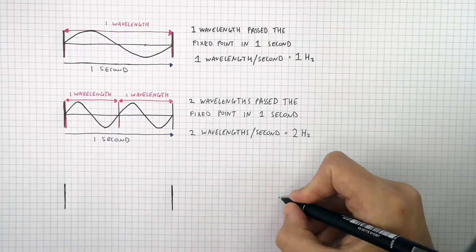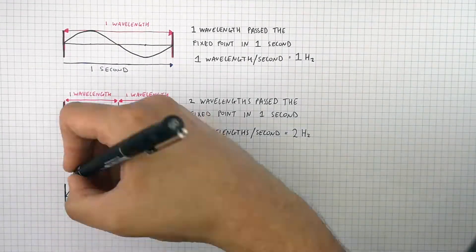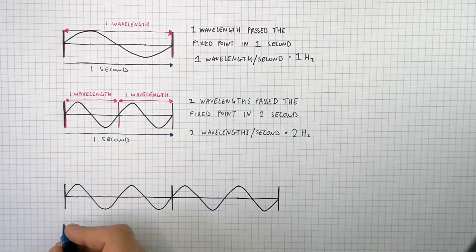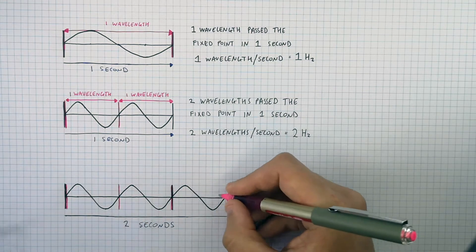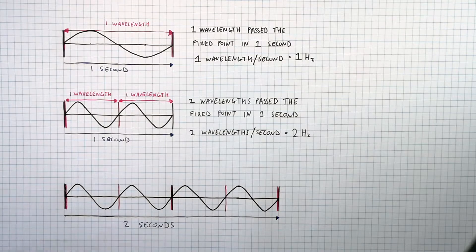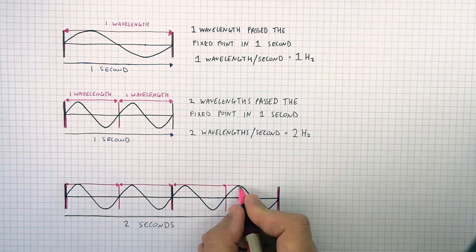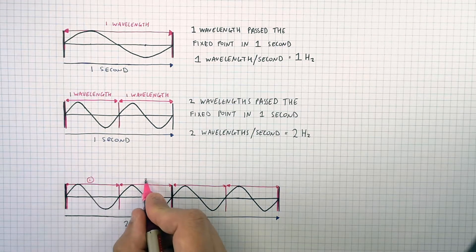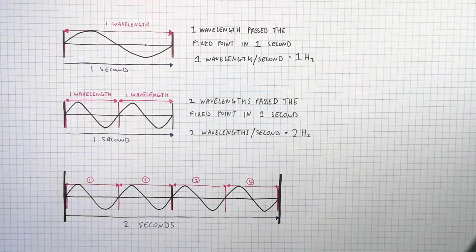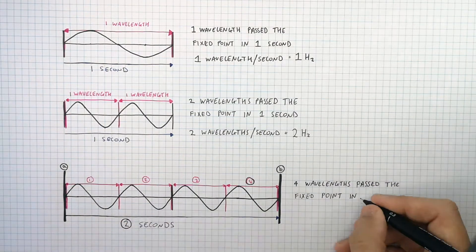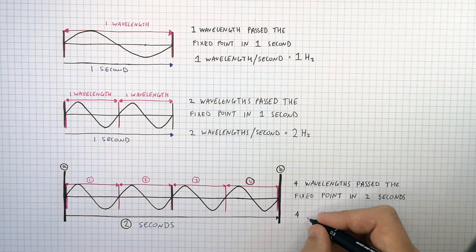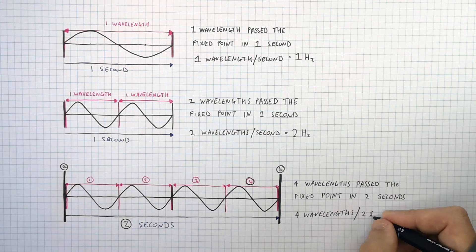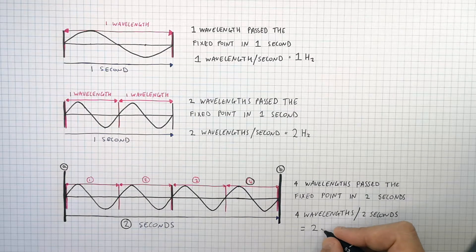What I've drawn here is two fixed points, A and B, and this wave passed these two fixed points in two seconds. To work out the frequency we need to know how many waves passed the fixed point in two seconds. Counting the wavelengths: one, two, three, four — so four wavelengths passed the fixed point between A and B in two seconds. To calculate the frequency, divide the number of wavelengths by the time: four wavelengths divided by two seconds gives a frequency of two hertz.